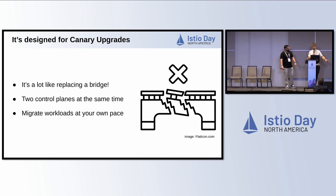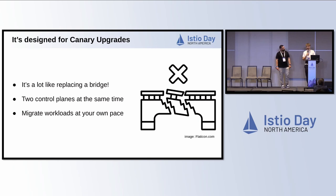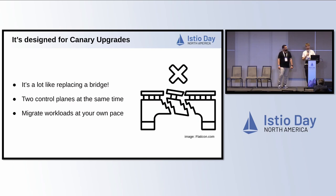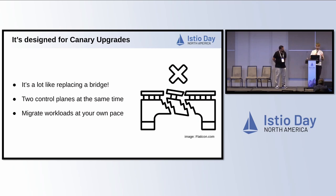What do you do? You build a temporary bridge next to it, reroute the traffic, and once you're done fixing the original bridge, you reroute the traffic again. We're not civil engineers, we're software engineers, so we don't build temporary bridges — but we do deploy a second control plane, reroute the traffic, migrate everything to the new control plane, and shut down the old one. That's basically the core idea of the operator.